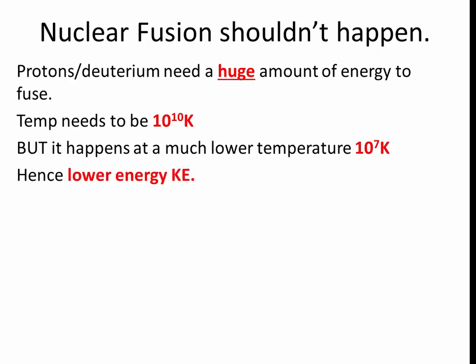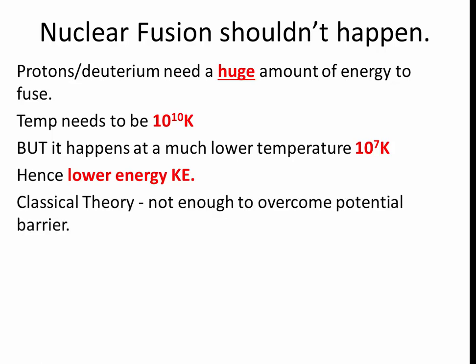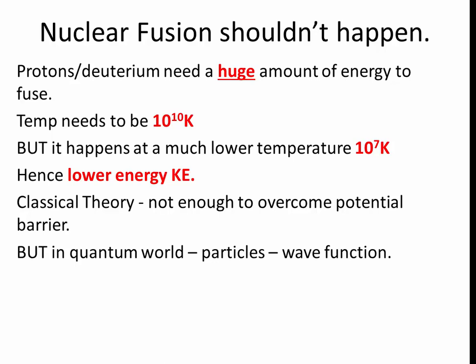The particles at this temperature have a much lower kinetic energy. Classical theory says that this kinetic energy they have at this temperature is not enough to overcome this potential barrier. But in the quantum world, these particles behave like waves and can be described by a wave function. Now, if you have two particles that are approaching each other, which are basically wave functions, their wave functions can overlap. And this is where we get quantum tunneling.